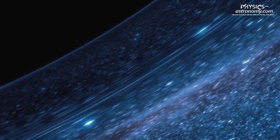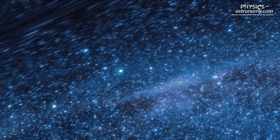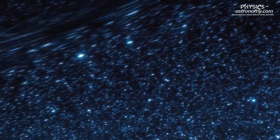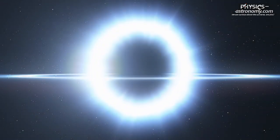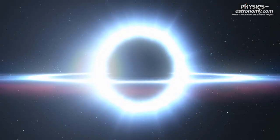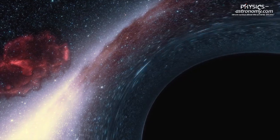A black hole is a region of space where gravity is so strong that nothing can escape, not even light. According to Einstein's theory of general relativity, black holes are formed when massive stars collapse at the end of their life cycle.